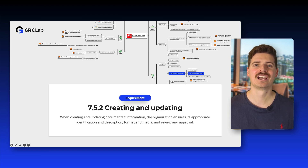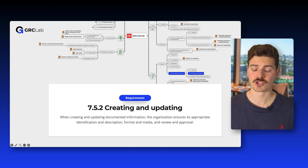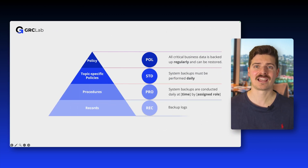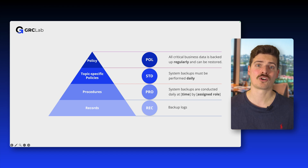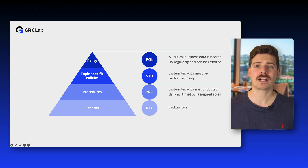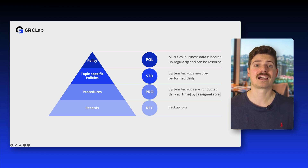Next up, let's have a look at 7.5.2 Creating and Updating. The required activity here is that when creating and updating documented information, the organization ensures its appropriate identification and description, format and media, and review and approval. Creating and updating documentation is a process that requires careful planning and attention to detail. Organizations need to identify how their documentation should be structured and choose a suitable documentation approach. In an information security management system, policies, standards, and procedures work together to ensure consistency, compliance, and effectiveness. They form a structured hierarchy where policies set the direction, topic-specific policies define the rules, and procedures provide step-by-step instructions.